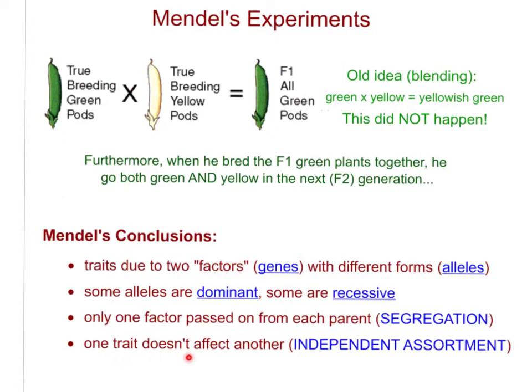He also concluded that one trait does not affect another trait — he called that the law of independent assortment. Looking at all seven pea plant traits, height and flower color, for example, do not travel together in the same way; they're basically inherited independently.